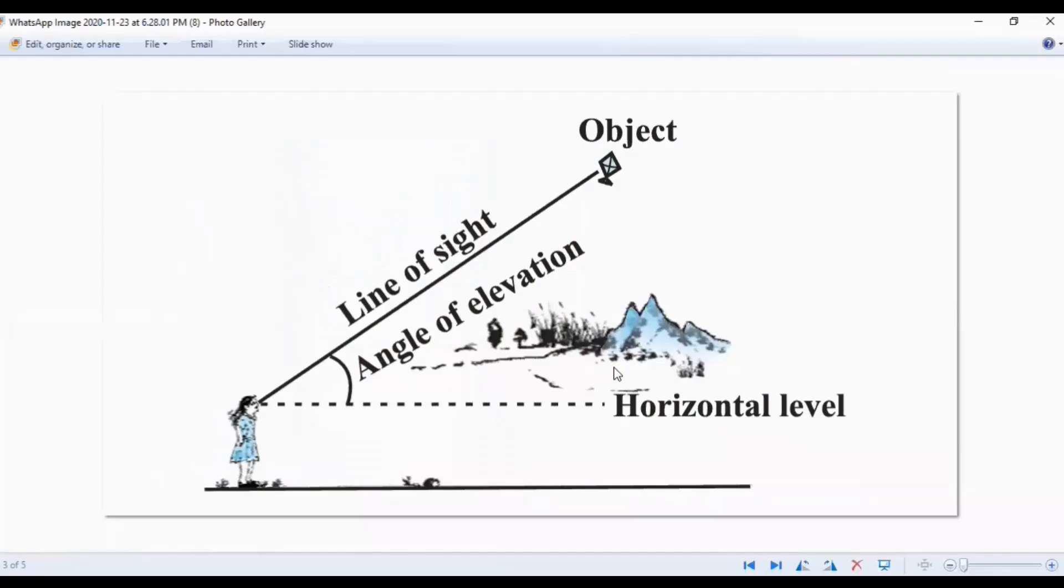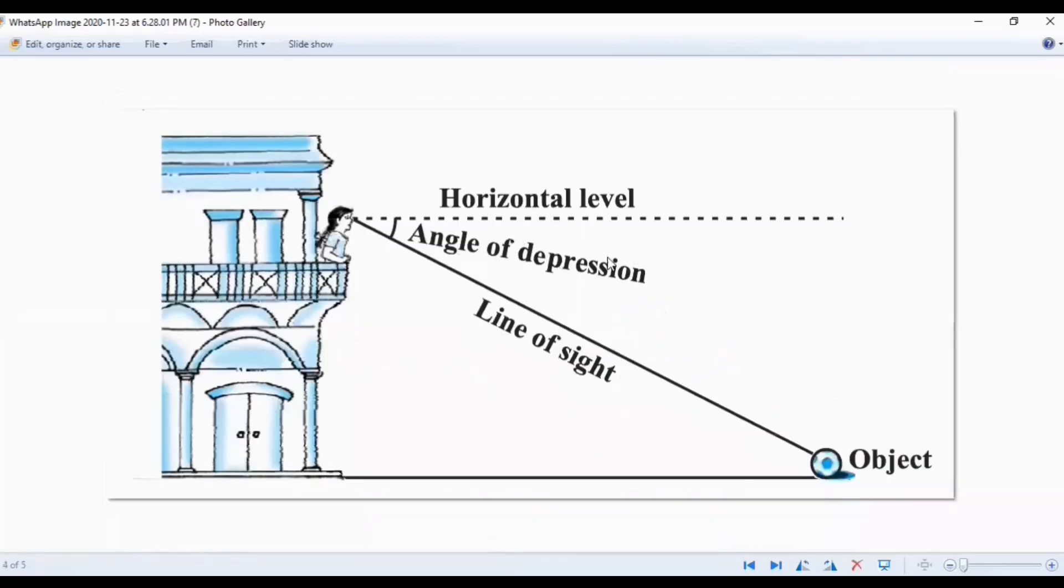So let's come to the video. When we raise our eye to look at some object on the top, then we call the angle formed between the horizontal level and the line of sight as angle of elevation. And when we look down it is called angle of depression. These terms we want to use.